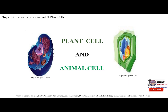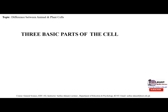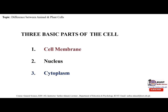Animal cells are the basic unit of life in organisms of the kingdom Animalia. They are eukaryotic cells, meaning they have a true nucleus and specialized structures called organelles that carry out different functions. The three basic parts of the animal cell are: cell membrane, nucleus, and cytoplasm.